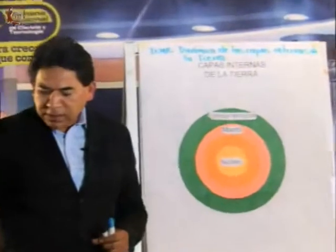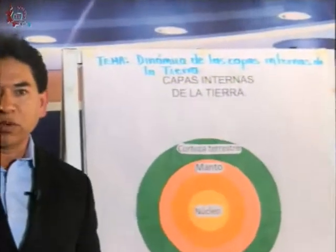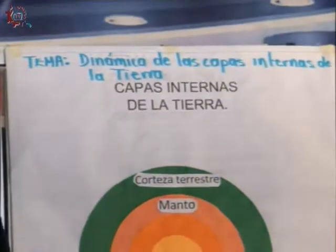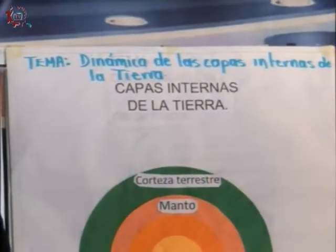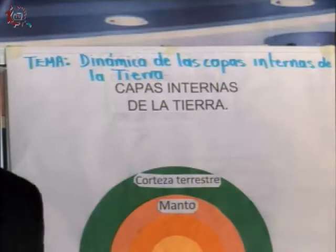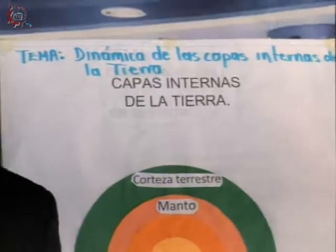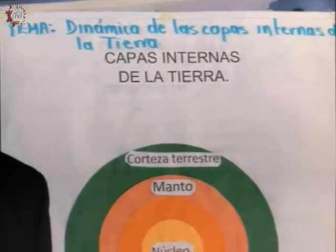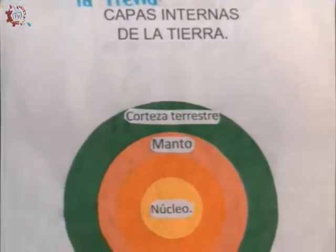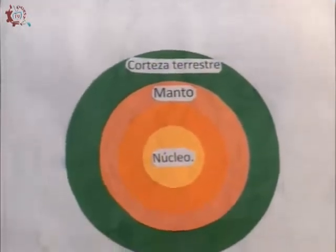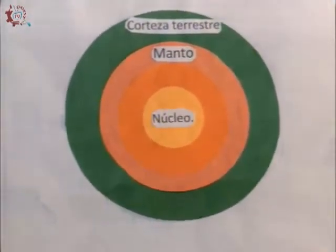The internal layers of the Earth have a lot of importance in our lives, because on Earth, the human being carries out economic activities, cultural activities, political activities, and social activities — which we saw in the first block — and that is the entry point into topic number 1 of block 2: the dynamics of the internal layers of the Earth.